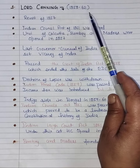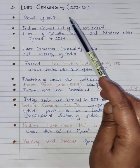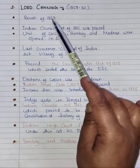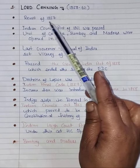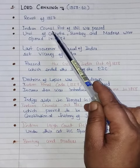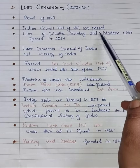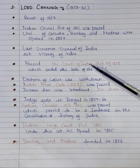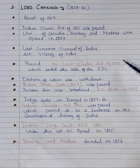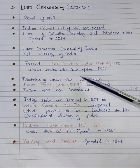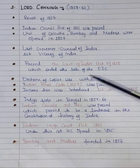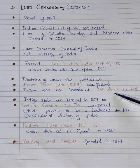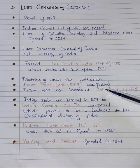In 1858, Lord Canning became the first Viceroy. He was the Governor of India under the Indian Councils Act 1861. The Universities of Kolkata, Bombay, and Madras were opened in 1857. The Government of India Act 1858 was passed. The Doctrine of Lapse and the Indian Penal Code were first introduced under Lord Canning in 1858.